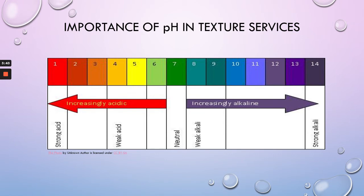We need to know the importance of the pH scale. The pH scale is numbered from zero to 14. Anything below seven is acid, and anything above seven is going to be alkaline. Most of our chemical texture services will take the hair to an alkaline state. The pH for hair, skin, and nails is 4.5 to 5.5.